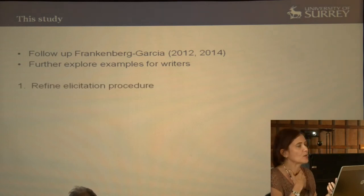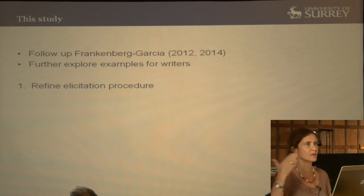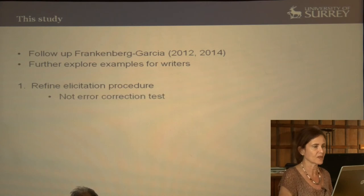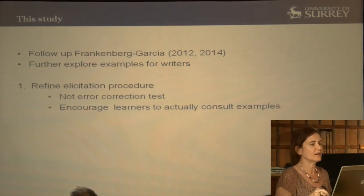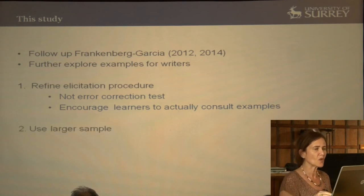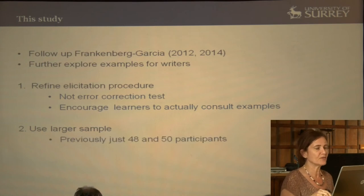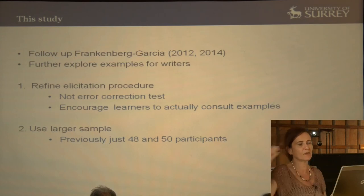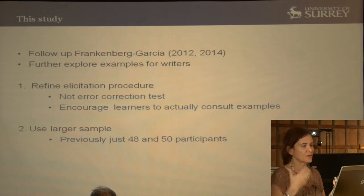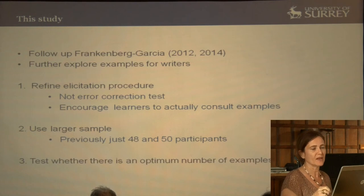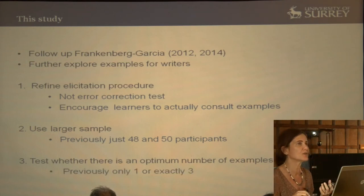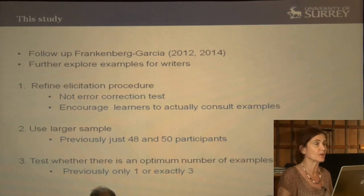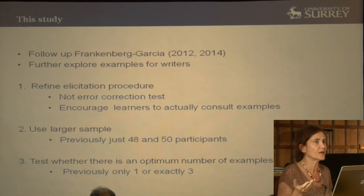This study is a follow-up to my previous work. I wanted to further explore examples for writers — for language production, examples seem to be very important. I wanted to refine my elicitation procedure: not an error correction test, but something that would actually encourage students to consult the examples rather than think the translation was easy. I also wanted to use a larger sample — previously just 48 or 50 participants — and test whether there was an optimum number of examples to give learners: one, two, three, or four.